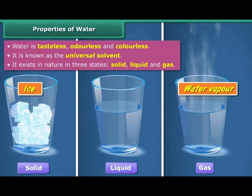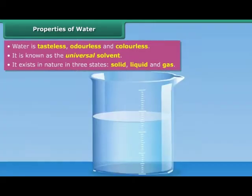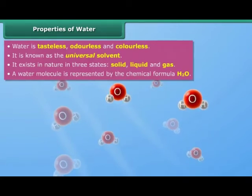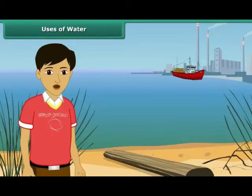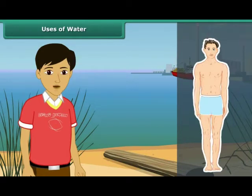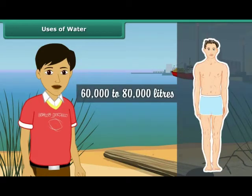The most common form that water takes is the liquid form, and it is in this form that it is simply known as water. A water molecule is made up of two hydrogen atoms and one oxygen atom, which is why water is represented by the chemical formula H₂O. On average, a human being consumes about 60,000 to 80,000 liters of water in his lifetime.